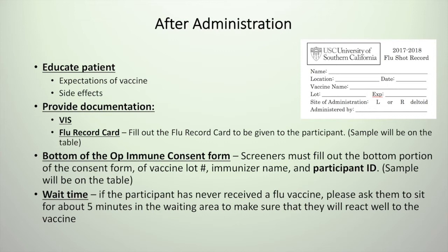This card will be filled out by you. Looking at the consent form once again, the boxes at the bottom of the page must be filled out. This includes the vaccine lot number, the immunizer name — your name — and the participant ID. Additionally, if this is the patient's first time getting a flu shot or it's been a while, please have them sit down for five more minutes just to make sure they react well to the vaccine.